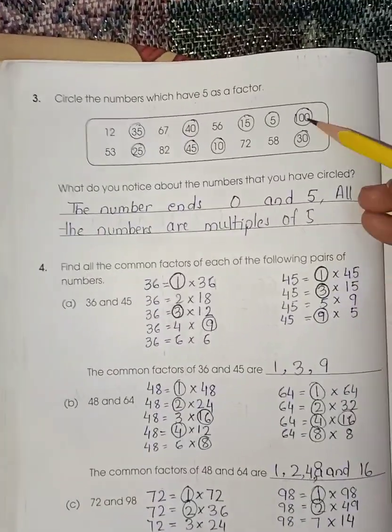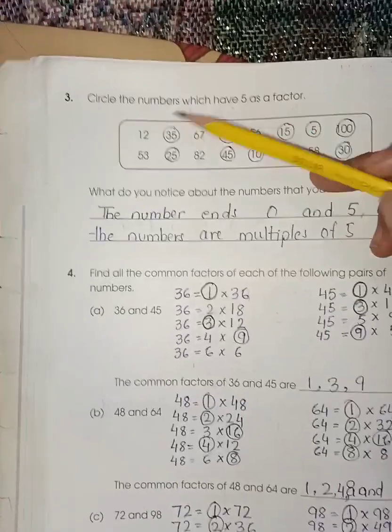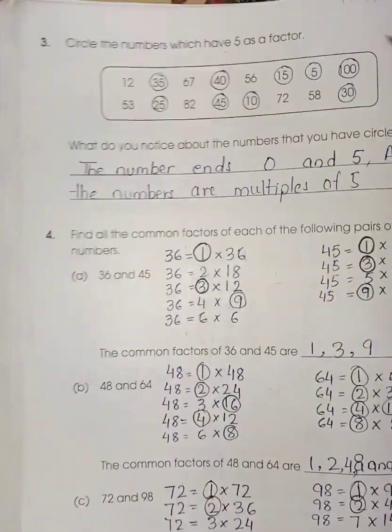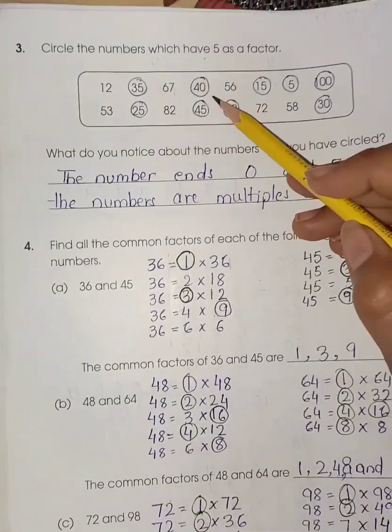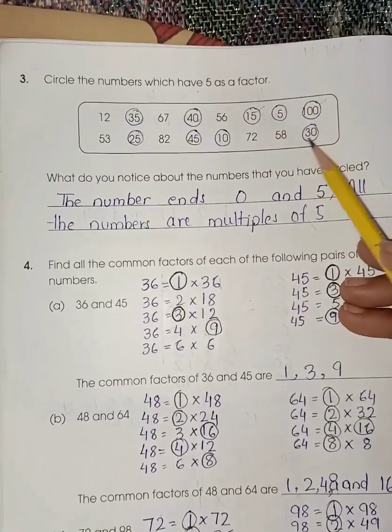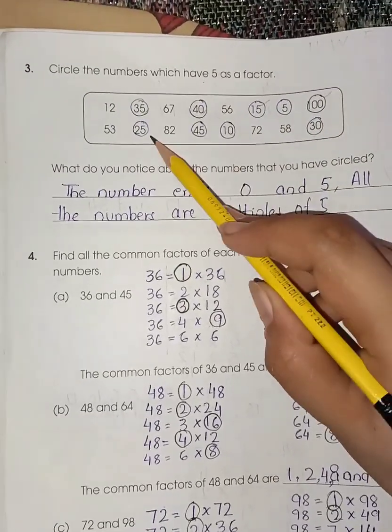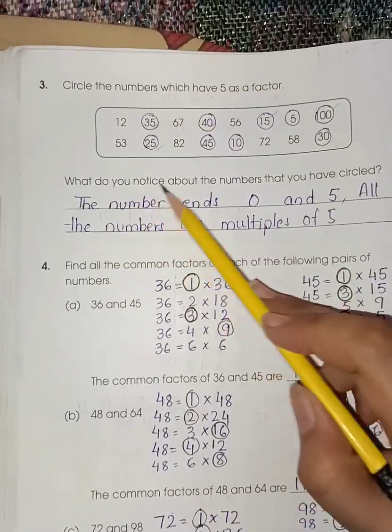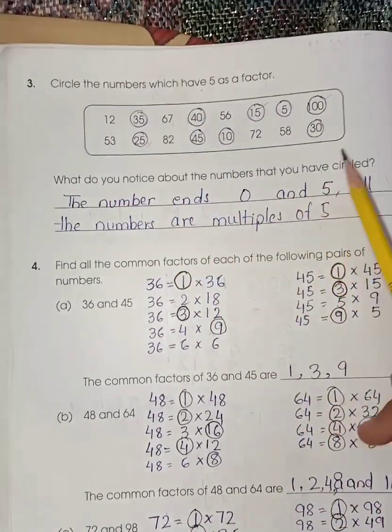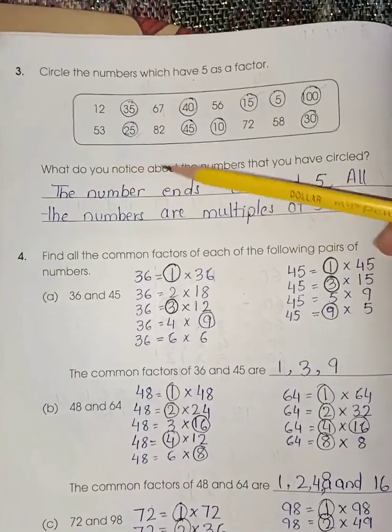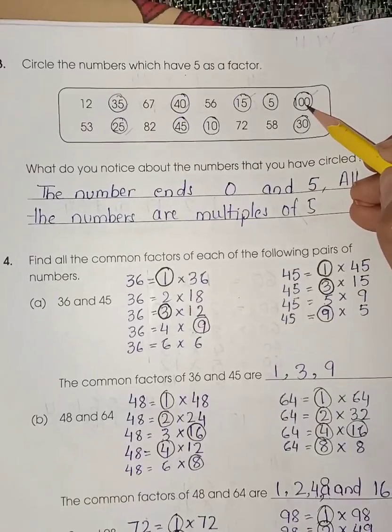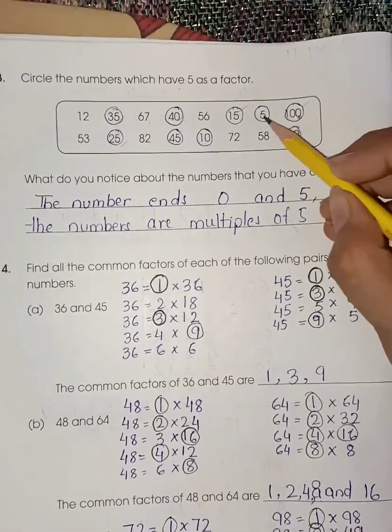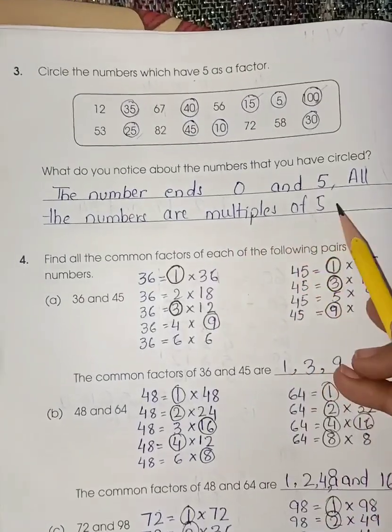Last page, page number 30, worksheet 1. Now here you have to circle the numbers which have 5 as a factor. So 35 is divisible by 5. It means 5 is the factor of 35. Circle 40, 15 and 100, 30, 10, 45, 25. Now what do you notice about the numbers that you have circled? So you have to give the statement that the numbers end with 0 and 5. So you can see the divisible of 5, the factor of 5 is 0 and 5. All the numbers are multiples of 5.